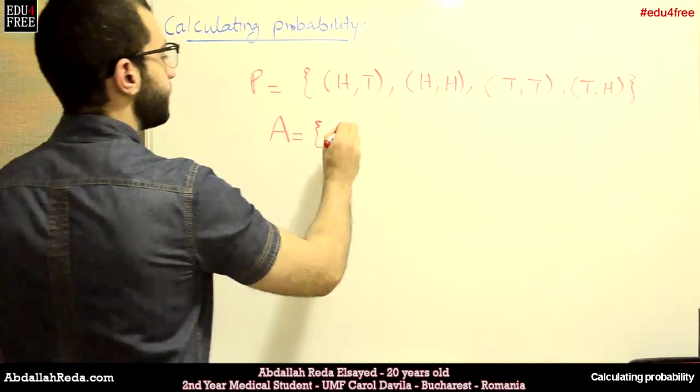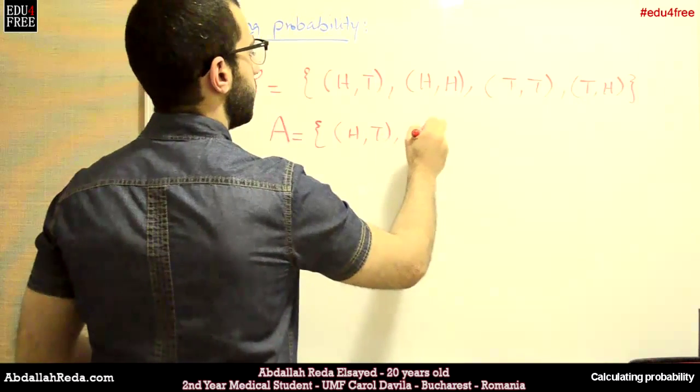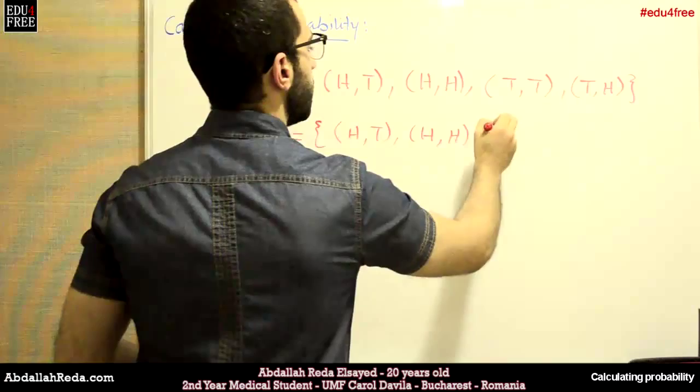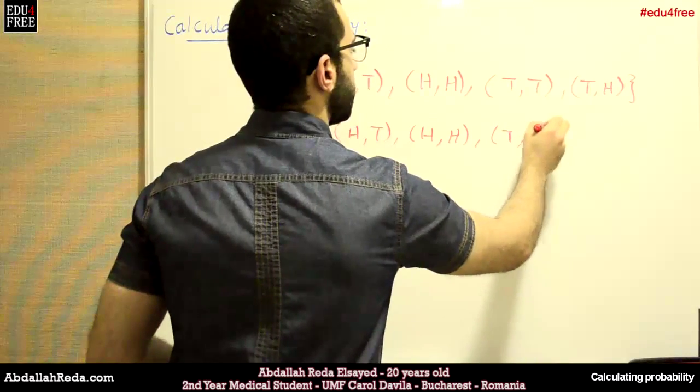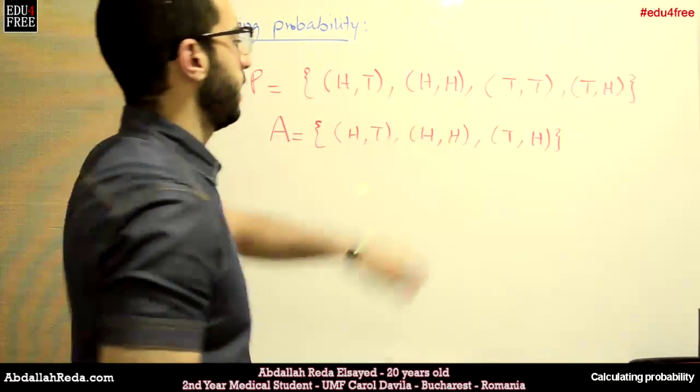So we have this one, and two heads of course, and a tail then a head. And this one would be excluded because it doesn't have at least one head. There are two tails.